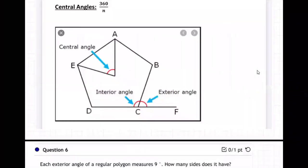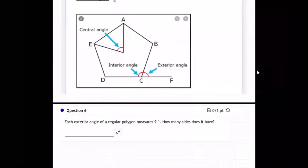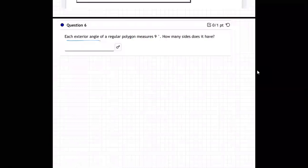So we just go back to the formula, the notes, exterior angles, 360 over n. Okay, exterior angle 360 over n equals nine degrees.